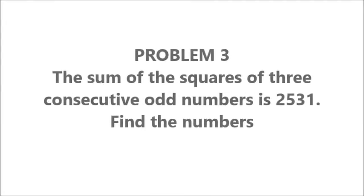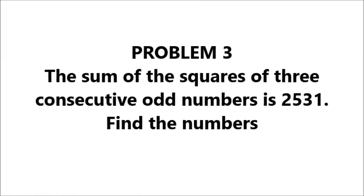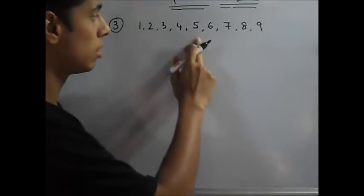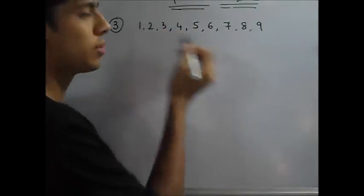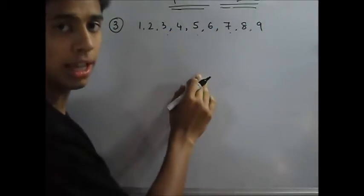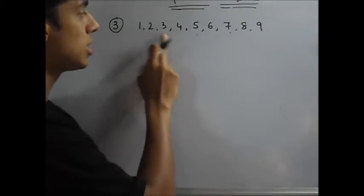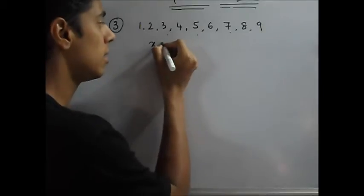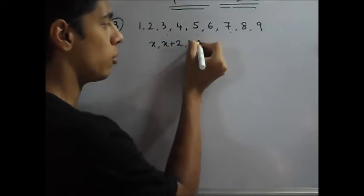Problem 3: The sum of the squares of 3 consecutive odd numbers is 2531. Find the numbers. Now as in the case with even numbers, odd numbers are also with a difference of 2. Now if you just see the first few odd numbers, 1, 3, 5, 7, 9, etc., you will see that the difference is 2. So now when you talk about consecutive odd numbers as well, you can assign them as x, x plus 2 and x plus 4.